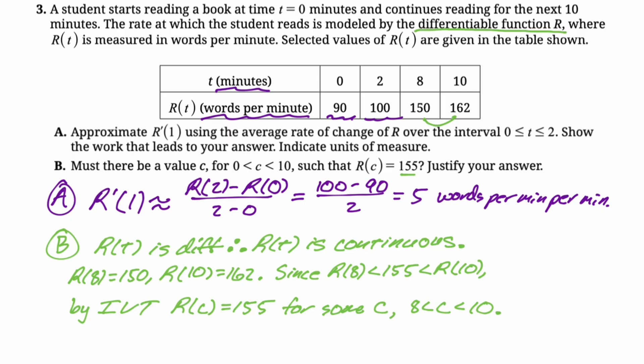I'm always a little paranoid about it. So I like to also say, therefore, for some c between 0 and 10, because that's what the problem actually asked for. I think they would definitely infer that 8 to 10 is between 0 and 10. But whatever, better safe than sorry. Let's look at the next part.